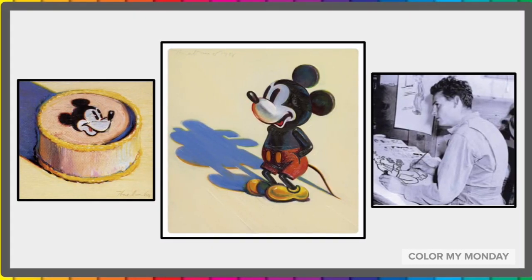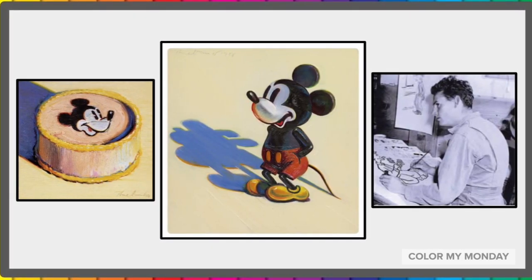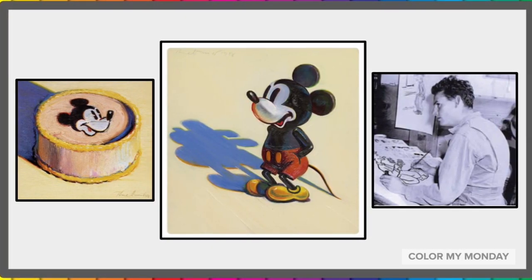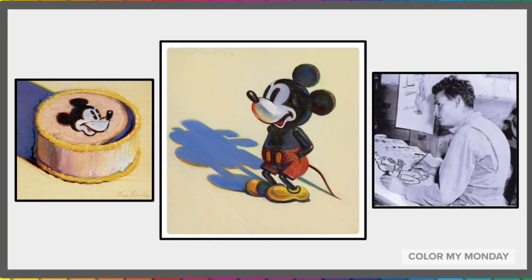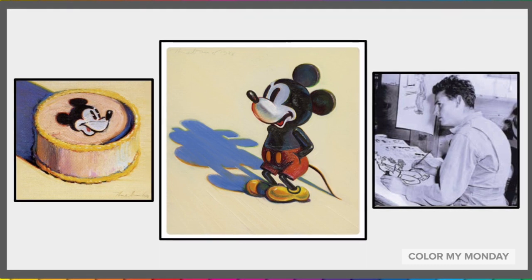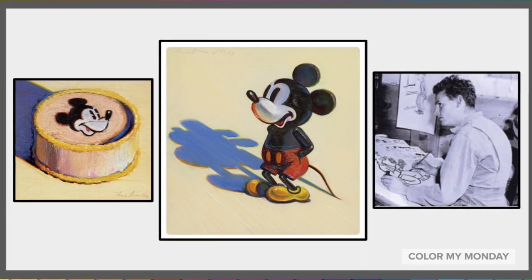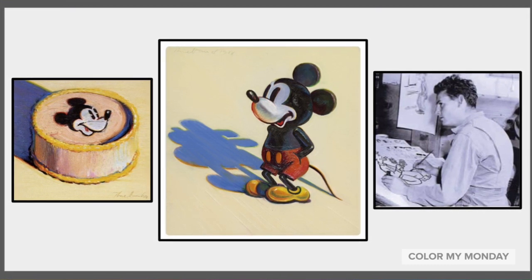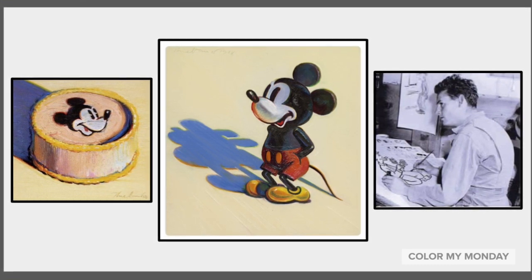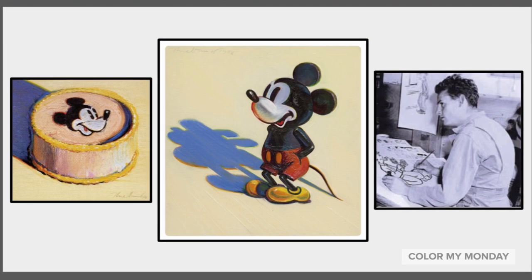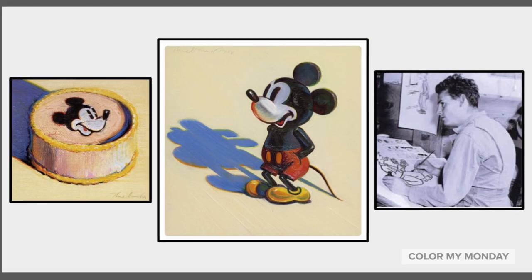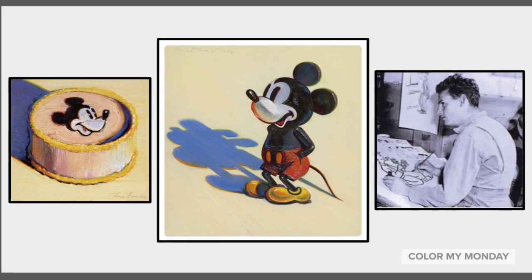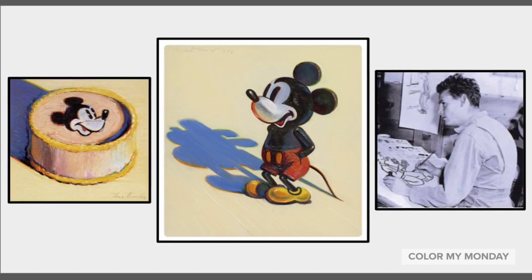When he was 16, in 1936, Wayne Thiebaud worked as an apprentice at Walt Disney Studios. He was called an in-betweener. His job was to draw the pictures that connected the more important frames.